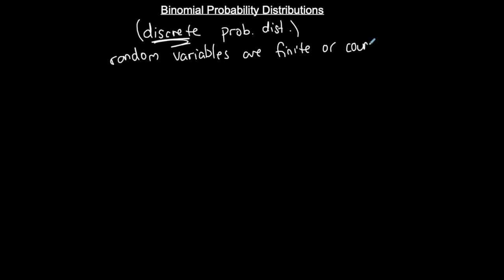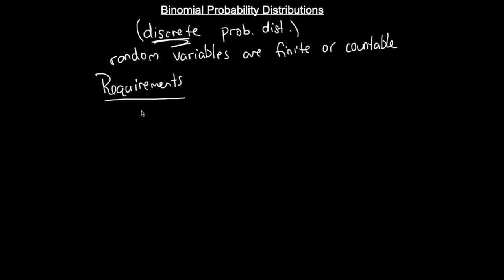Our outcomes are discrete random variables. There are certain requirements that need to be met before we do a binomial probability distribution. It's a special type, and once a situation meets these requirements, calculation of the probabilities involved becomes much simpler using binomial methods.